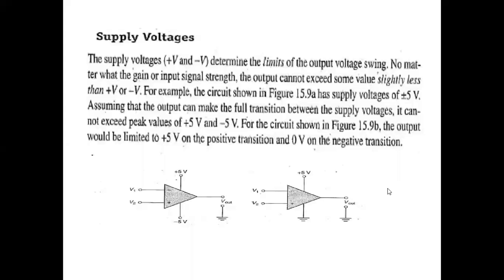We were discussing the supply voltages. The supply voltage actually defines limits for the outputs — the maximum values that the output can reach. The supply is defined by our positive and negative supply voltages. In the starting point, the positive voltage and negative voltage will tell us the output limits.